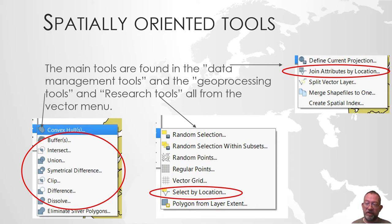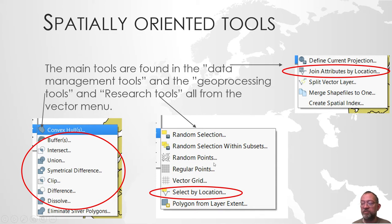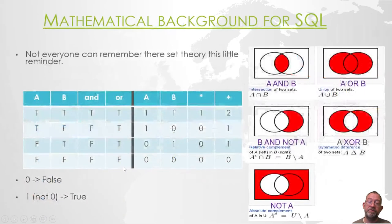In the research tool, we will primarily be looking at Select by Location. That is a typical choice used very often. For more advanced things, you might also use random points, but Select by Location is a very commonly used tool.